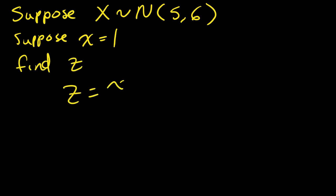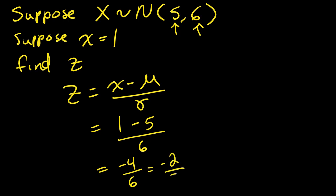So again, z equals little x minus mu divided by sigma. Little x is 1, mu is 5, sigma is 6. So we have negative 4 over 6, which is negative 2 thirds. When we round this - we usually round all z-scores to two decimal places - this would be negative 0.67. So that's our z-score.